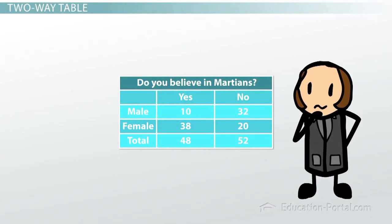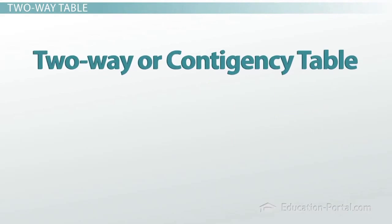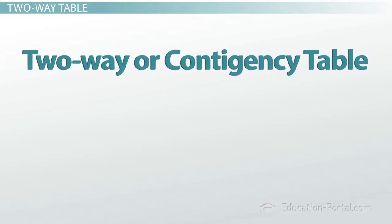Do you believe in Martians? Here's a survey of 100 college students asking that very question: Do you believe in Martians? This type of table is called a two-way or contingency table.